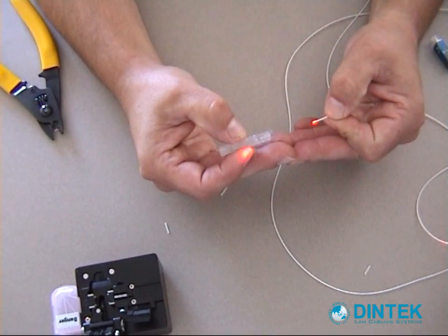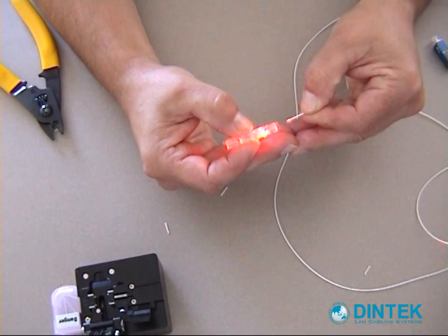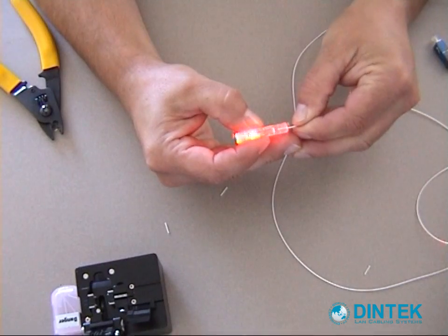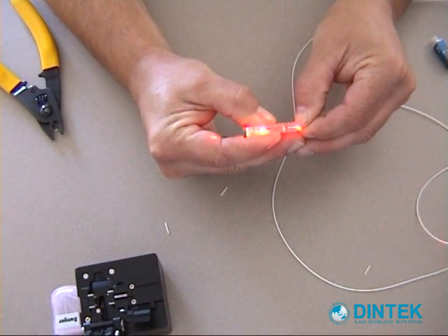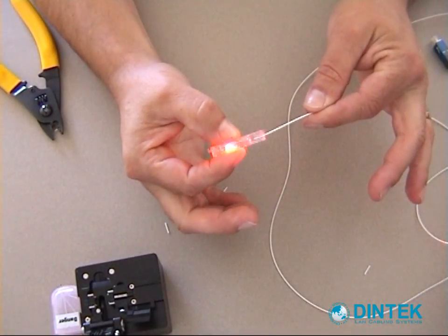We'll take our fiber splice and insert that into one end of the splice. Keep the pressure on it when it's all the way in and push that locking tab in place. So now that's held in place.